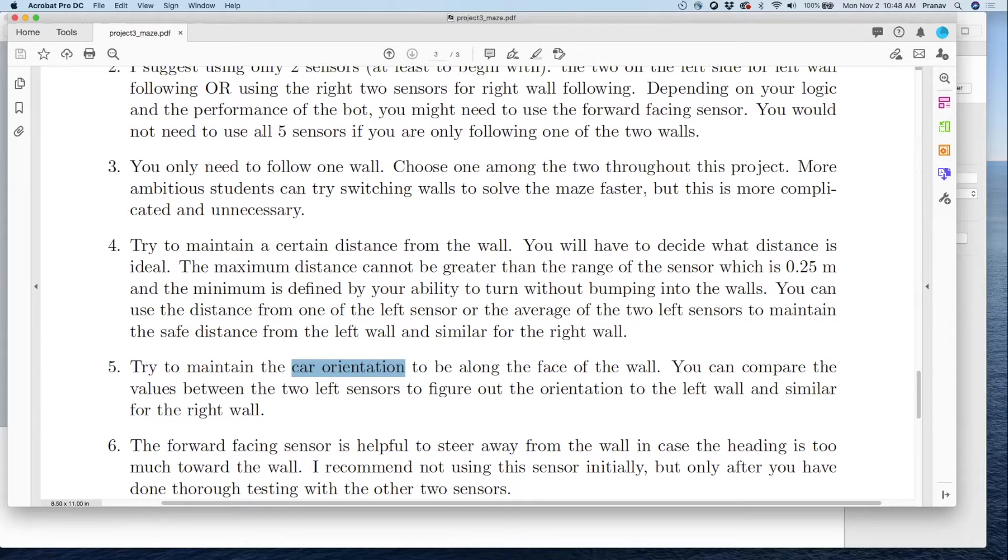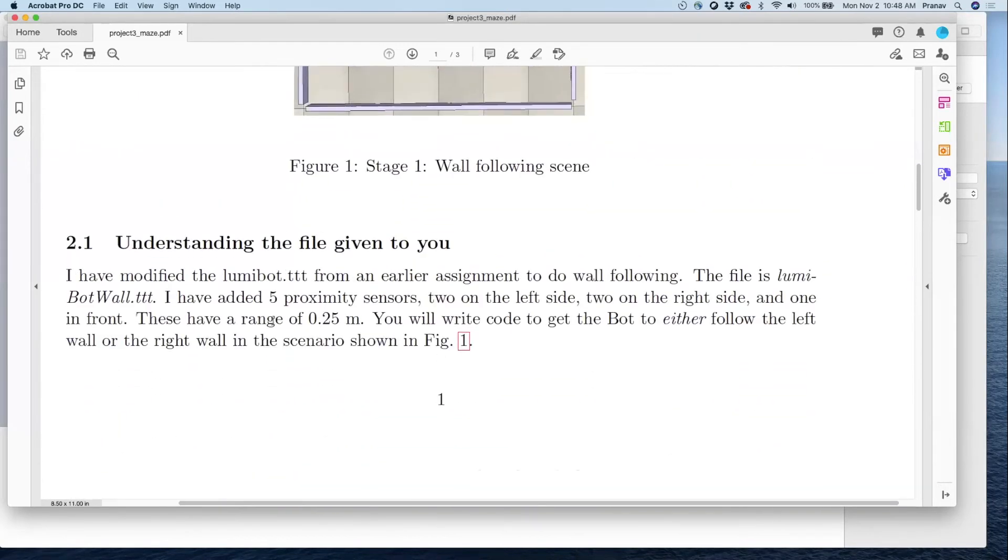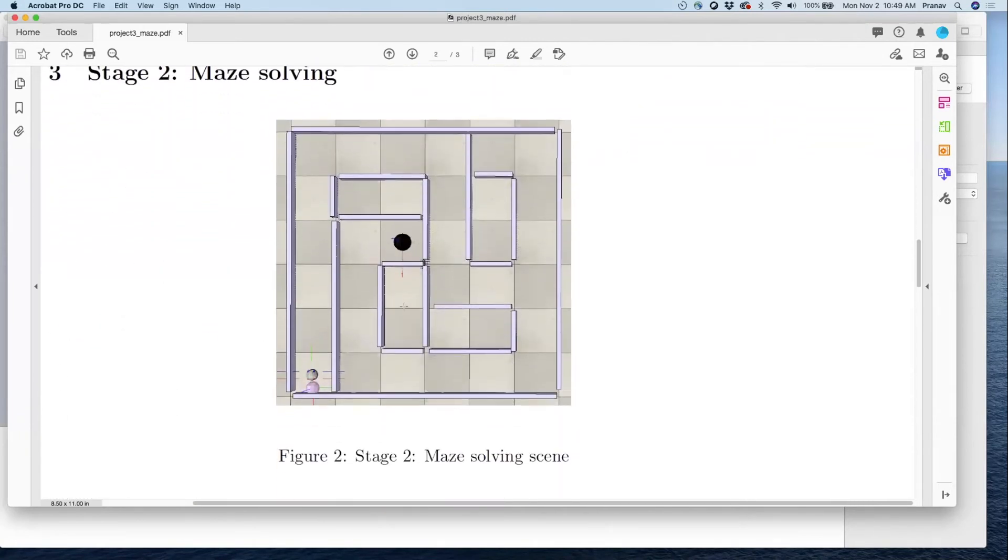It's not due next week. The due date is not Monday, but you have the whole week to work on it. Let me finish the second part. This is the wall following scene, get it to work here. Once you do that, you can then go to the maze and solve a maze. Here's an example maze where you can actually follow one of the walls and reach the black dot. The black dot is the goal, the pink dot is the start. You can either follow the left wall or the right wall and then you can reach this.